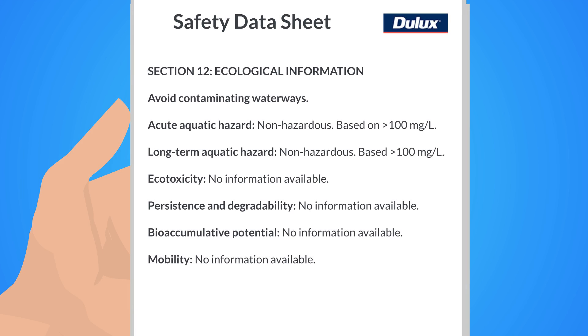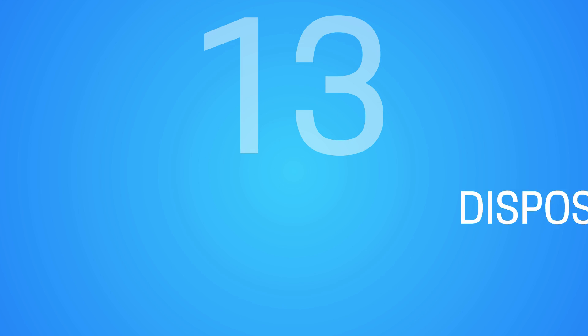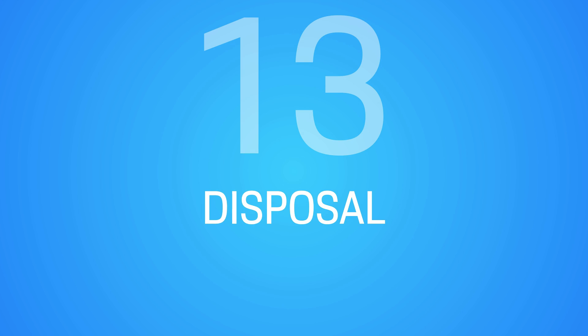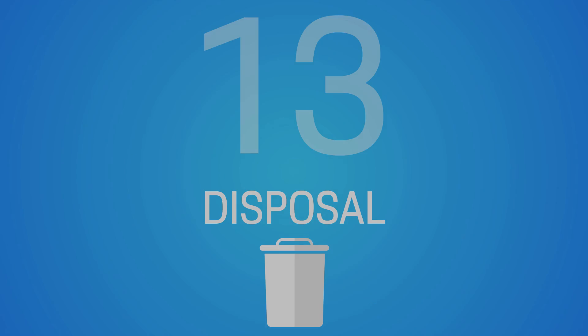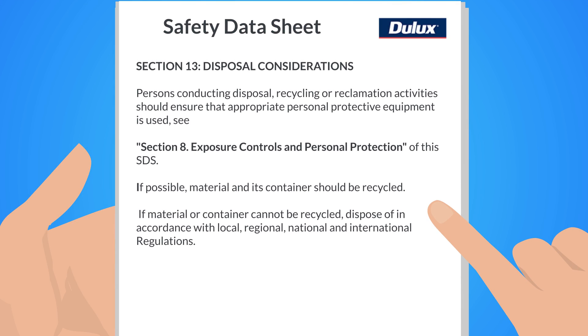Section 12 provides detailed information on the ecological hazard of the said chemical. Section 13 details how the chemical should be correctly disposed of, recycled, or reclaimed.